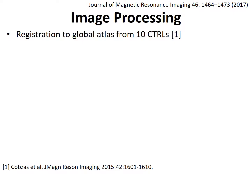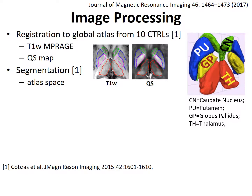In terms of image processing, we first registered our brain acquisitions to a global atlas from 10 healthy controls, according to methodology published by Hobson et al. We used T1-weighted MPRAGE images and quantitative susceptibility maps to automatically segment deep brain matter structures in atlas space. Example T1-weighted and quantitative susceptibility segmentation contours are shown from a healthy subject, and the visualization of the four segmented deep brain structures is shown on the right.